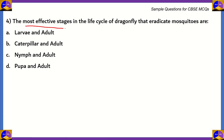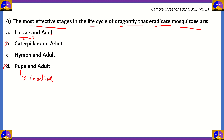Next question: the most effective stages in the life cycle of a dragonfly that eradicate mosquitoes are: (A) larvae and adult; (B) caterpillar and adult; (C) nymph and adult; (D) pupa and adult. Option B is eliminated because the baby stage of a dragonfly is called nymph, not caterpillar — caterpillar is used for butterfly. Option D is incorrect because the organism inside the pupa is inactive. Option A is misleading because larvae usually refers to mosquitoes themselves. The correct option is C, nymph and adult — those are the two stages mentioned in the text.